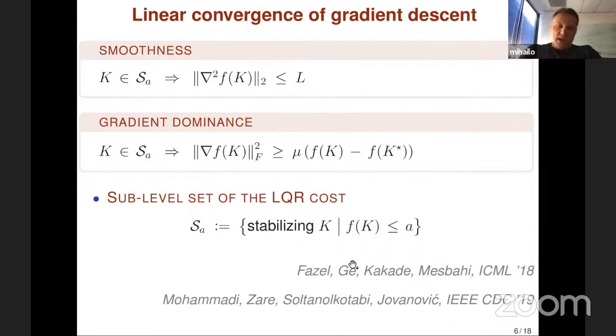These two properties have been utilized in recent work by the UW group to prove global convergence of gradient descent over the set of stabilizing feedback gains for discrete time systems. We provided an alternative proof that utilizes standard system theoretic convex reparametrization for continuous time systems, reported last year at CDC.